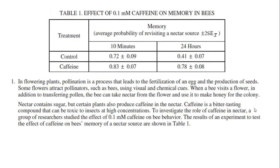Now let's look at another example from the AP test — the effect of caffeine on memory in bees. Researchers gave bees 0.1 millimolar caffeine and looked at their average probability of revisiting a nectar source after 10 minutes and after 24 hours. The question gave you a standard error of the mean — plus or minus two SEs — so we see 0.72 plus or minus 0.09 for the control and 0.41 plus or minus 0.07 after 24 hours.